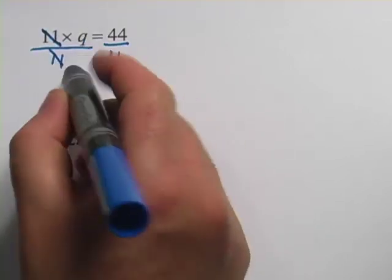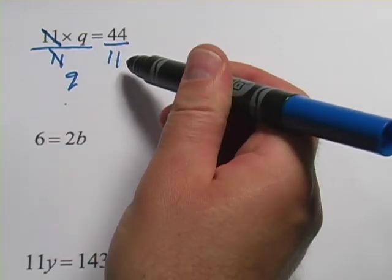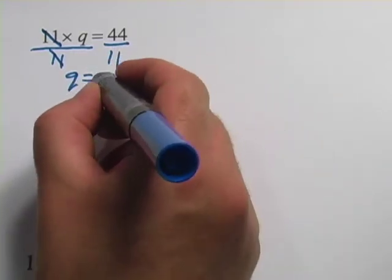And all you get is q over here, which is what you want. On this side, you've got 44 divided by 11. That equals 4.